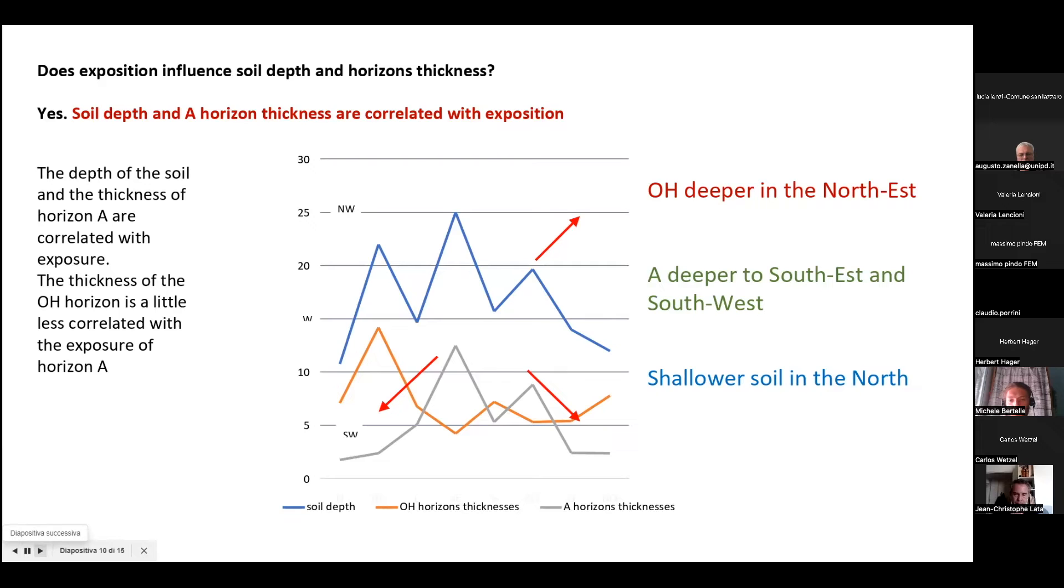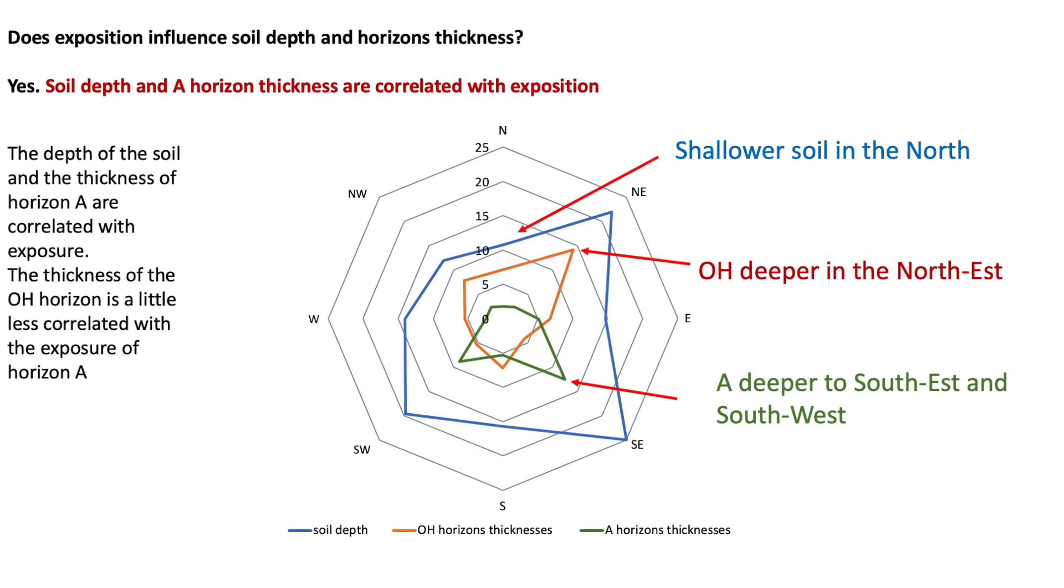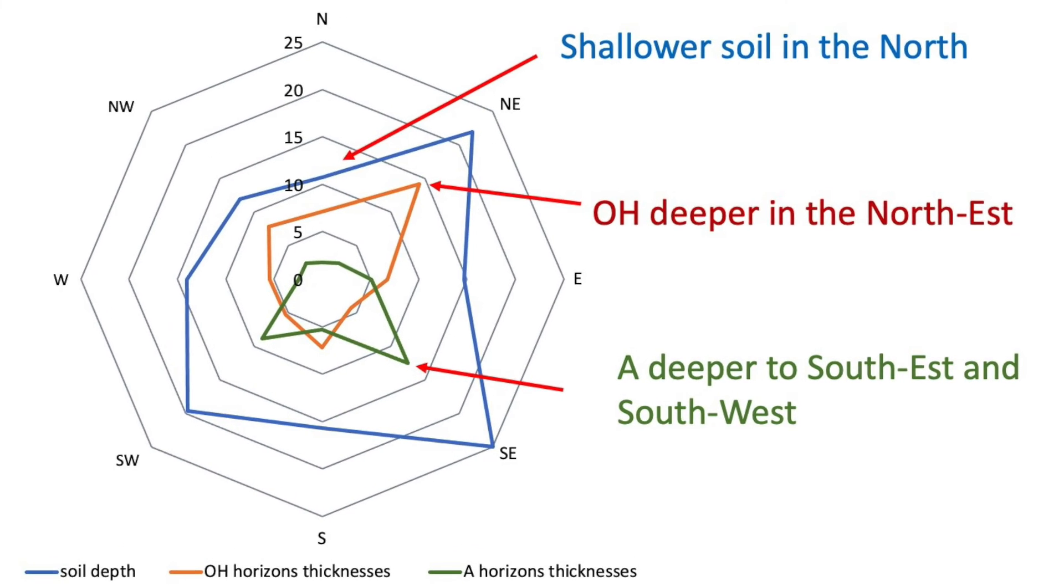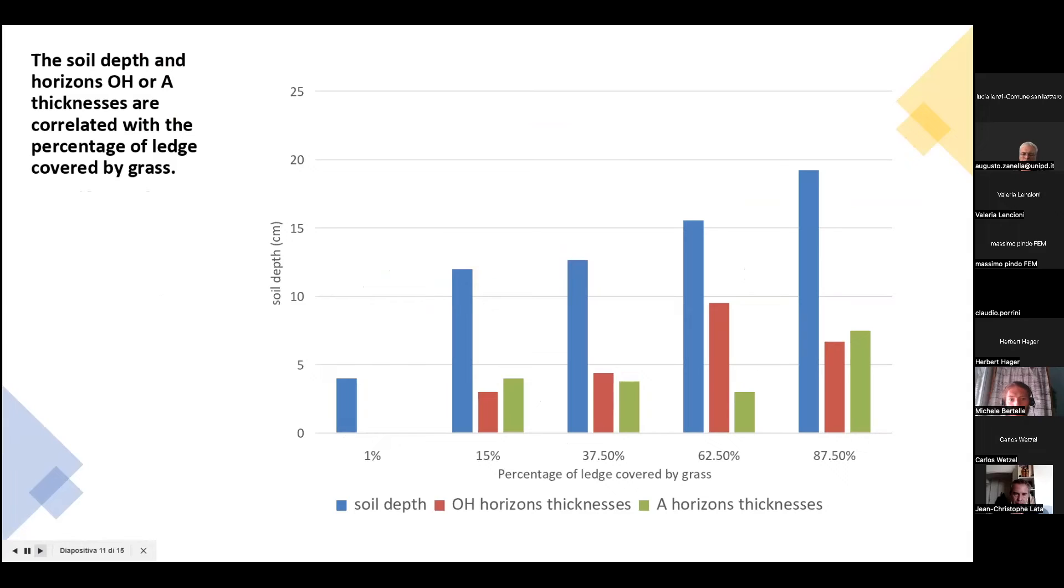Here we have a relation between the soil depth and also, once again, the thickness of the two main horizons with the percentage of the ledge area covered by grass.